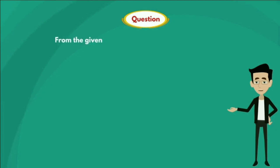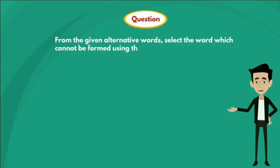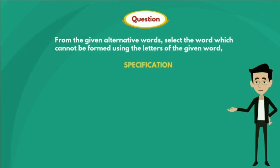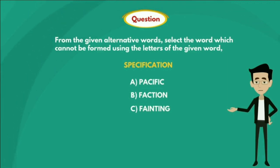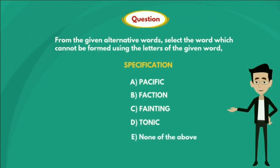Question: From the given alternative words, select the word which cannot be formed using the letters of the given word SPECIFICATION. Options are: Option A - PACIFIC, Option B - FACTION, Option C - FAINTING, Option D - TONIC, and Option E - None of the above.